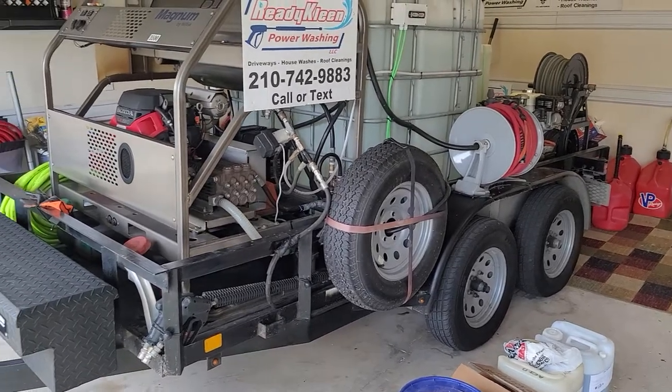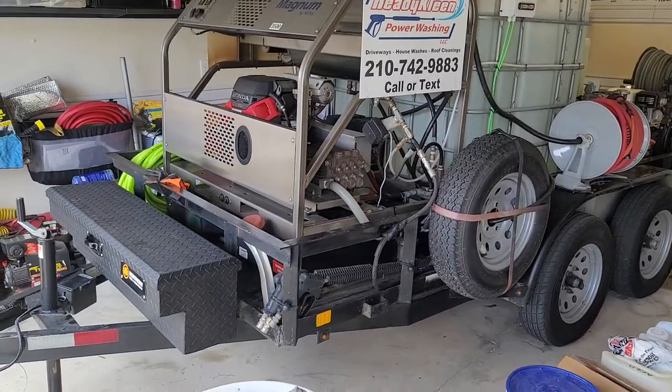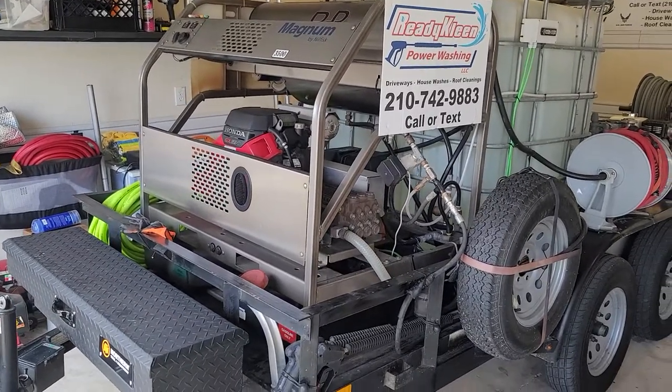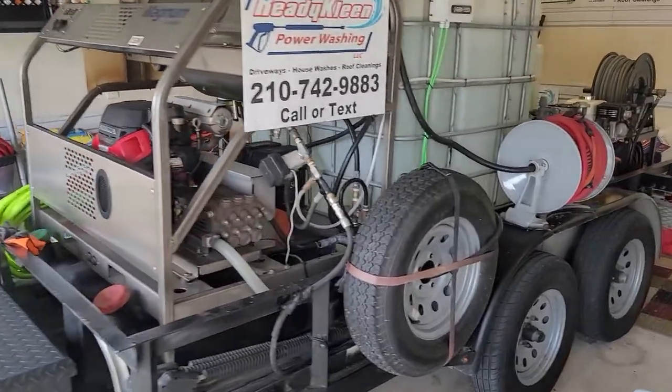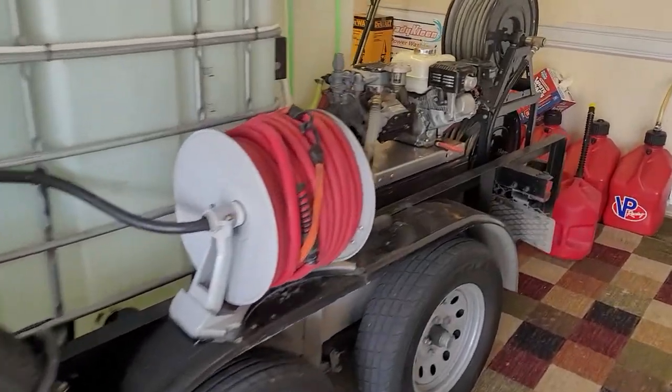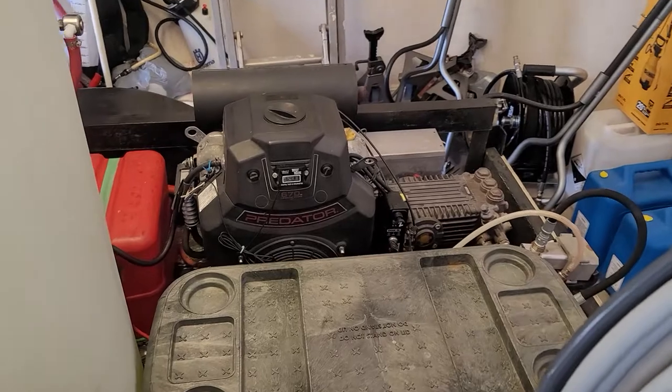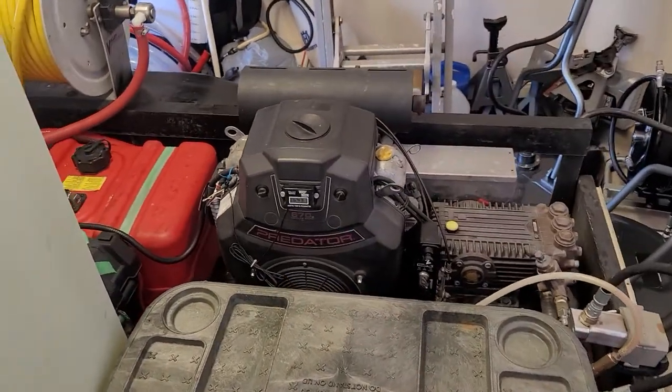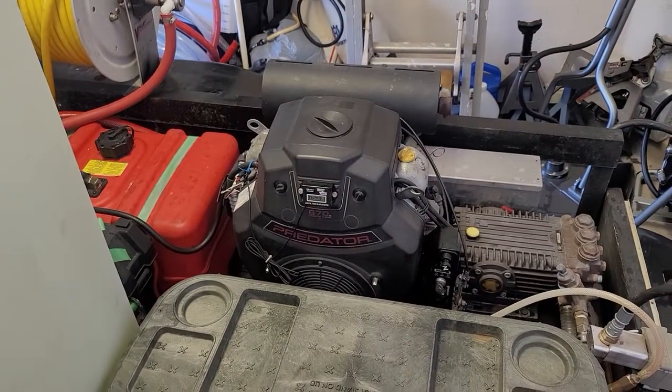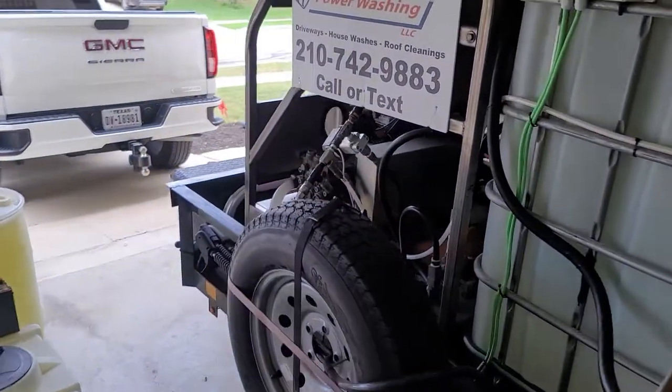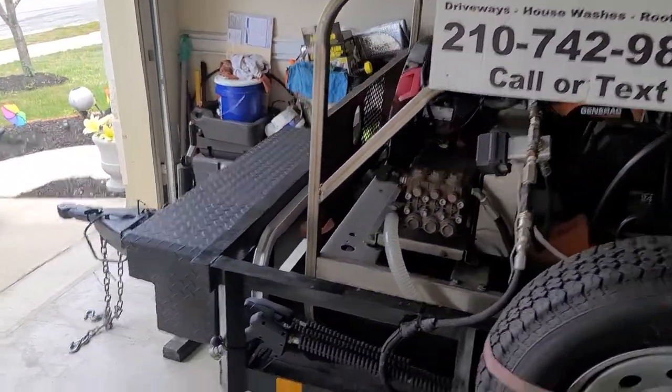I have a 5x12 tandem axle trailer with a 3,500 PSI, 8 gallon a minute hot water unit, and also a Predator 10 gallon a minute, 3,500 PSI unit. The hot water unit has a 12 gallon fuel tank, and there's also a 12 gallon diesel tank.